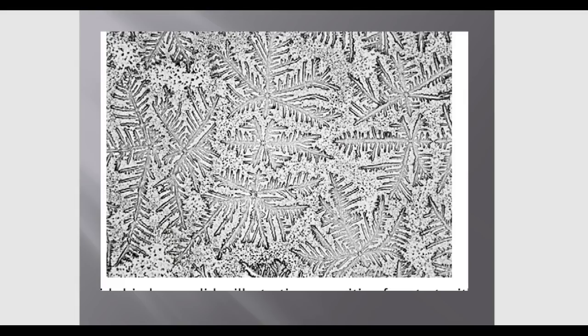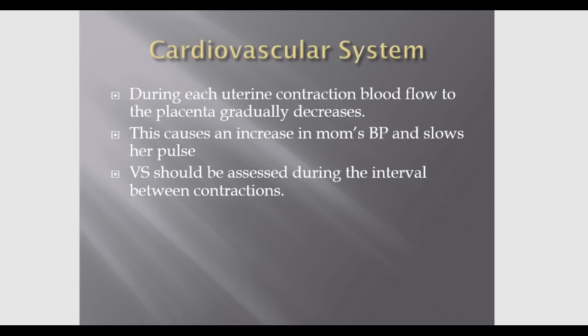Another way to determine membrane rupture, when nitrazine testing is inconclusive, is the fern test. A vaginal swab is placed on a microscope slide on the labor and delivery ward. Amniotic fluid on the slide will form a fern leaf-like pattern. If this pattern is seen, clinicians can be fairly confident that the amniotic sac has ruptured.